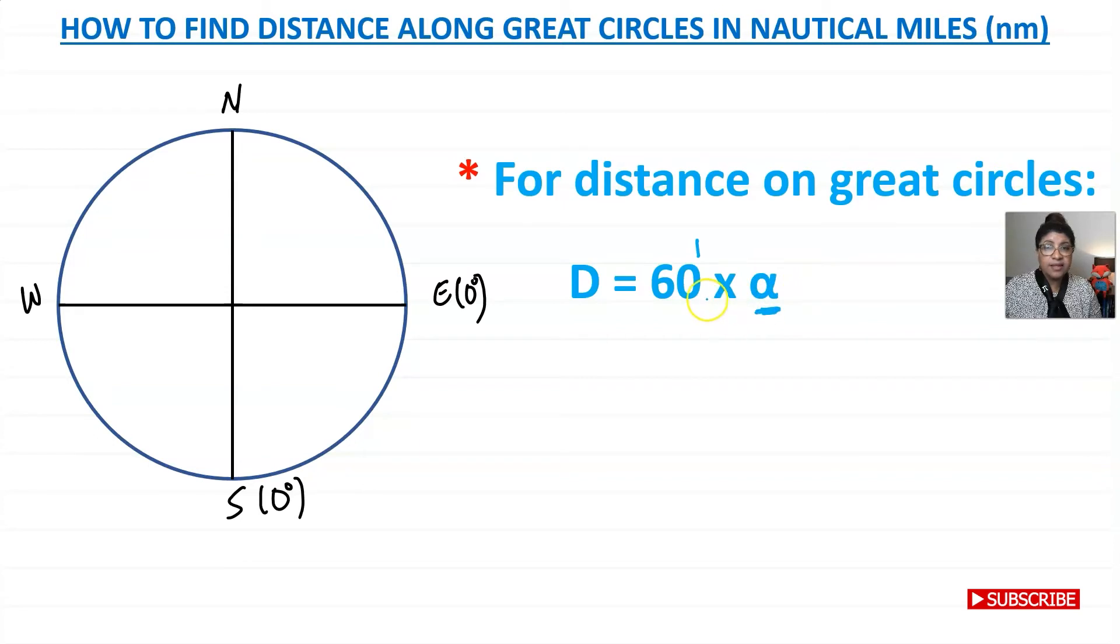Alpha is the angular difference between latitudes. So if you have, for example, here two latitudes, one there and one there, and you're trying to find distance between this, let's say you have your meridian there, that's your great circle, and you want to find distance from there to there, point B.